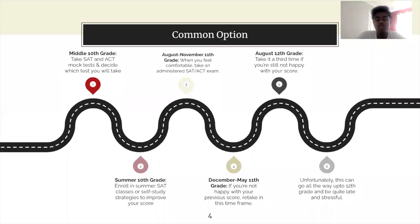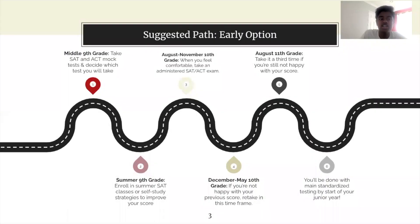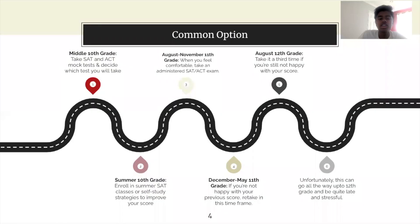Here's a more common option you might hear people taking — it's pretty much delayed by a year. Instead of starting in the middle of ninth grade, you'll start in the middle of tenth grade. This may end up taking you all the way to August of your senior year if you're not happy with your scores the first two times, which is when you start applying for colleges, and that can get very stressful.